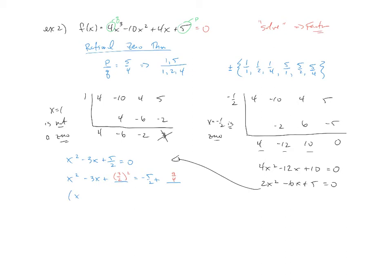So the left side will factor into x minus 3 halves squared. And on the right-hand side, we've got a negative 5 halves plus 9 fourths. So to build up our LCD, I'll need to multiply a 2 over 2 here, which would be a negative 10 fourths plus 9 fourths, which would just be a negative 1 fourth.